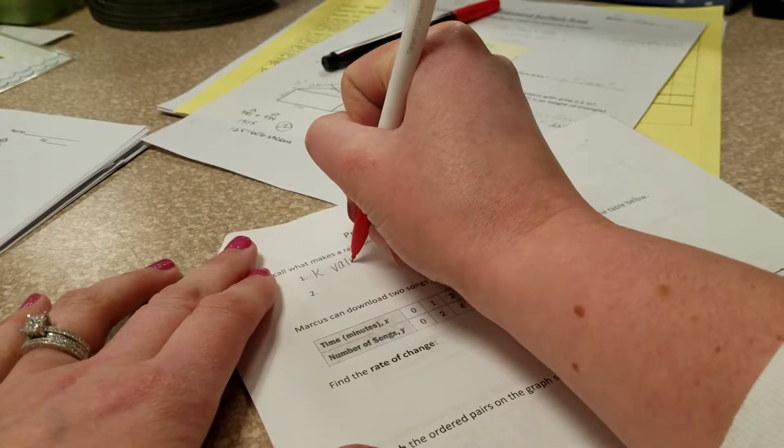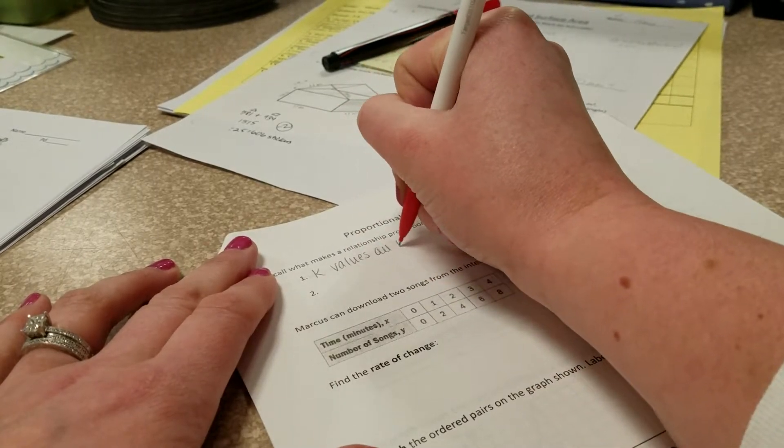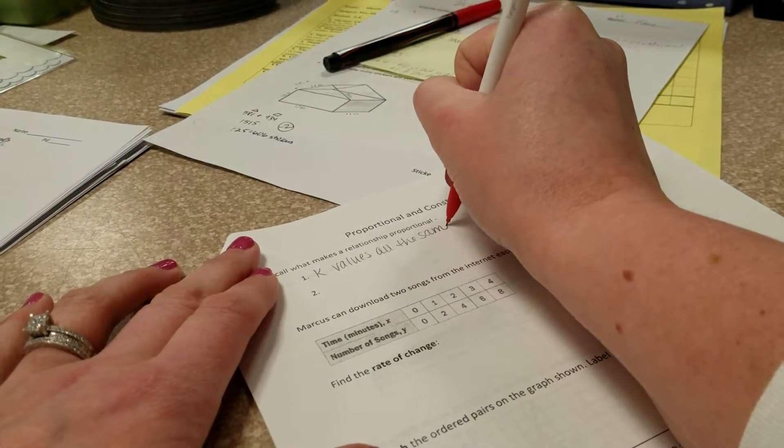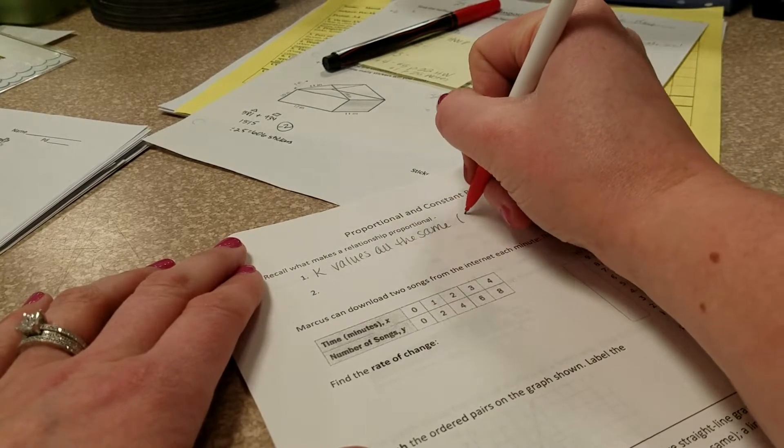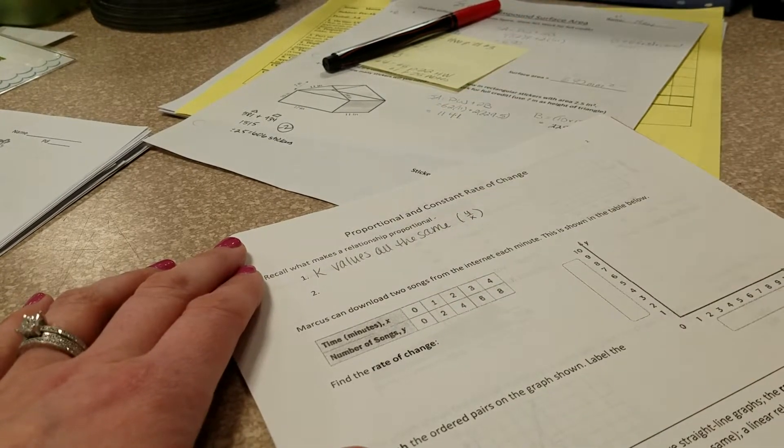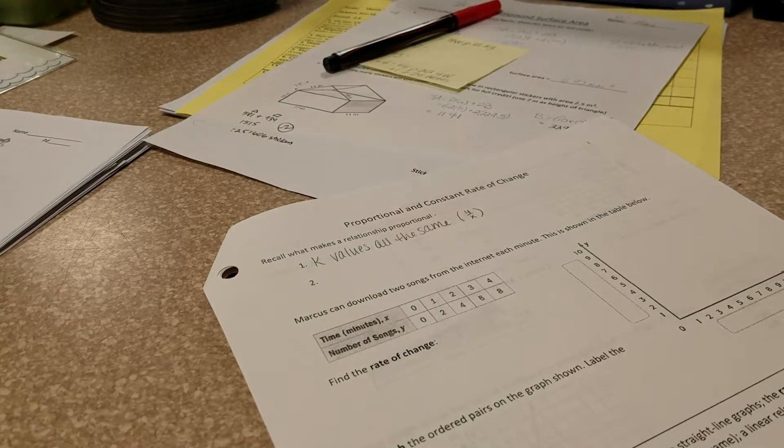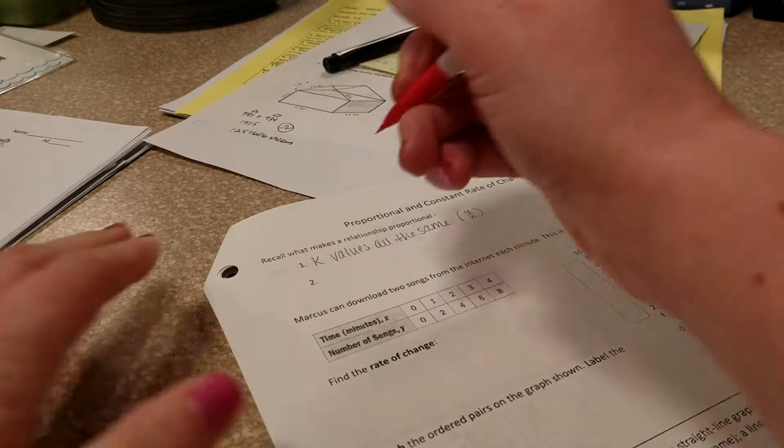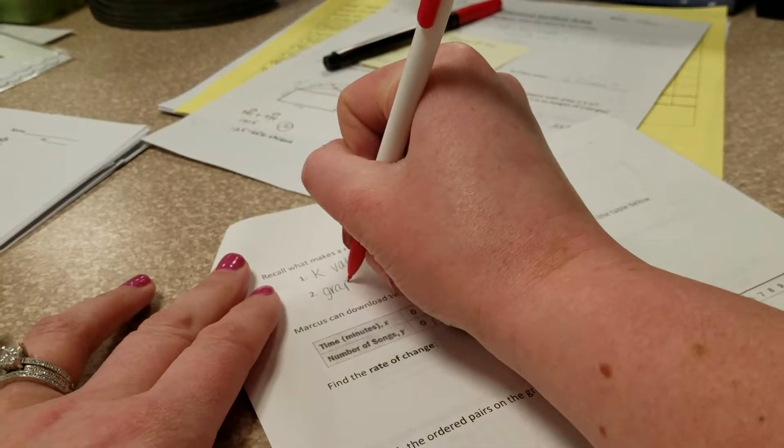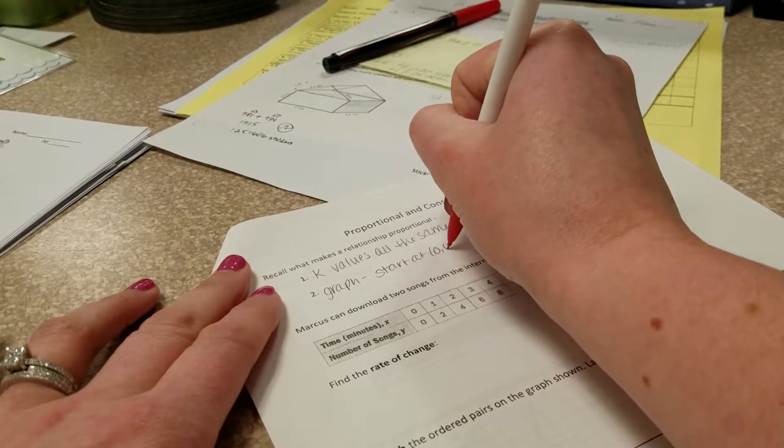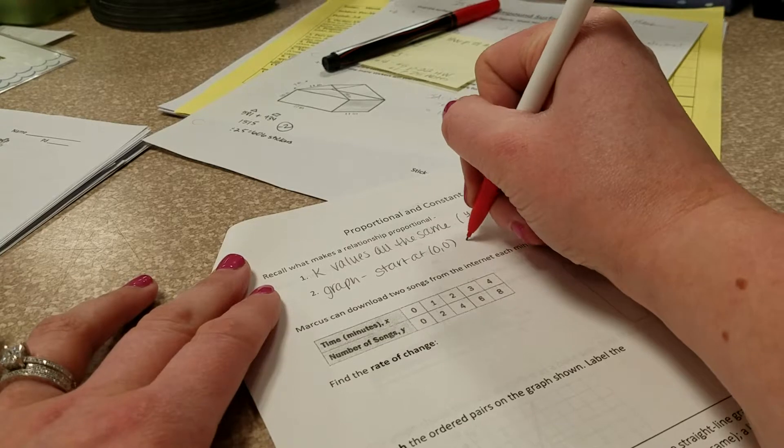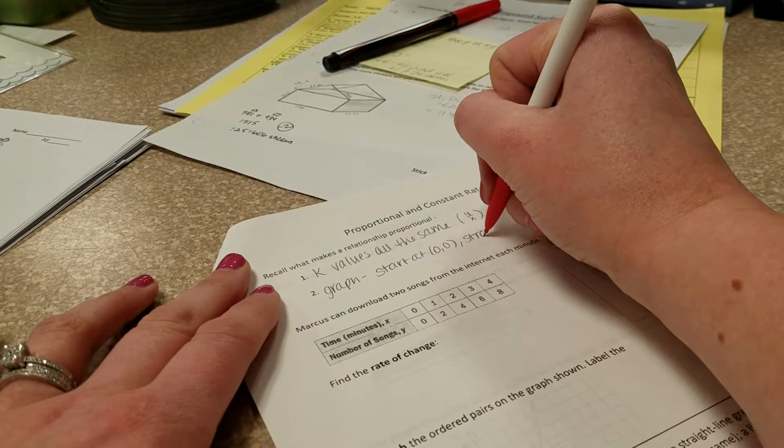First of all, the k values all have to be the same. So if we're looking at a set of data points or a chart or something like that, when we do y divided by x, that's how we get k. All your k values are going to have to be the same. If you are looking at a graph, remember it has to start at 0,0, and it has to be a straight line as well.